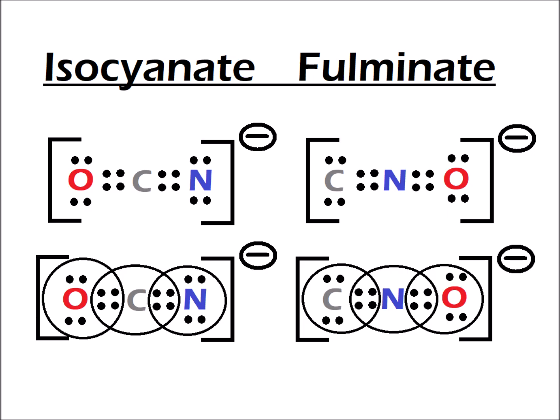Hello. In this video, we are going to look at two related but different ions: the isocyanate ion, OCN⁻, and the fulminate ion, CNO⁻. We notice that they have the same exact atoms — the only difference between the two is their connectivity. We want to see how calculating the formal charge can give us some insight into the relative stabilities of these ions.